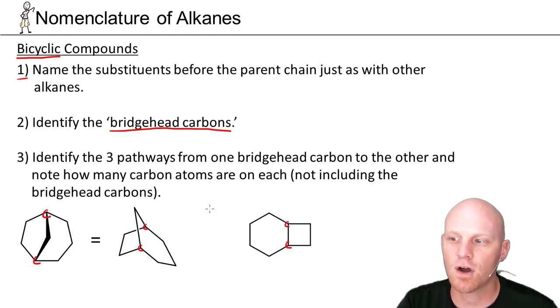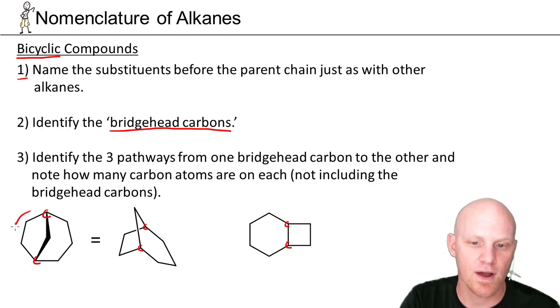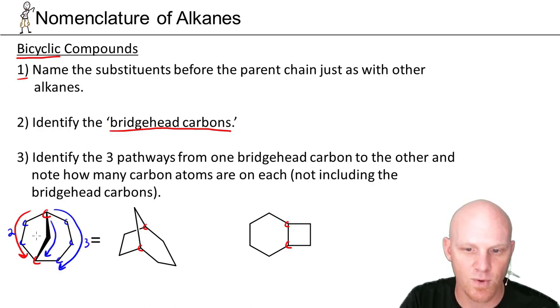Once you identify those bridgehead carbons, you want to identify the three pathways you can take through the molecule to get from one bridgehead to the other and how many carbon atoms are on each path. So if we go around this way, we'll come across two carbons. So we'd want to identify the fact that we're crossing two carbons to get from bridgehead to bridgehead. If we go around this way, we'll cross one, two, three carbons. And if we take this pathway, we'd come across just this one carbon. So we can see there's three, two, and one carbons on these pathways.